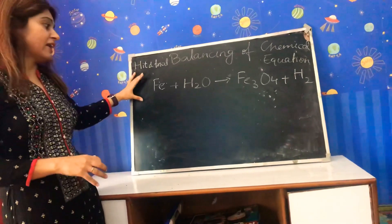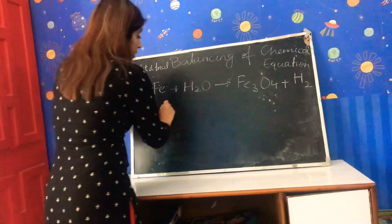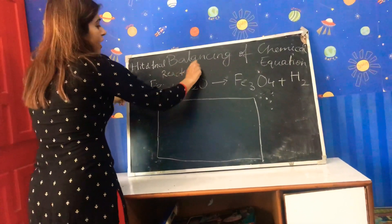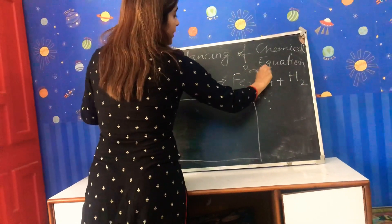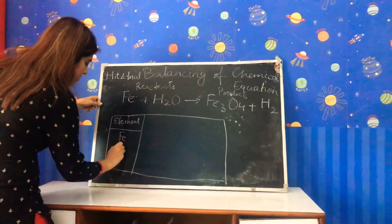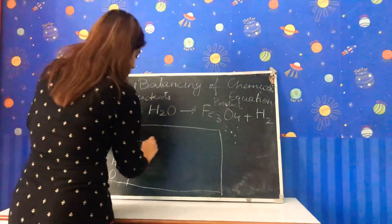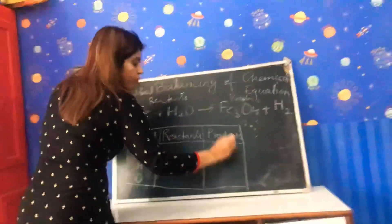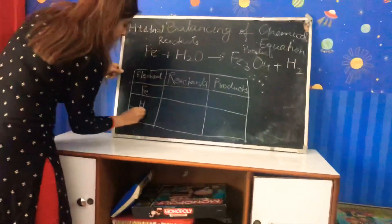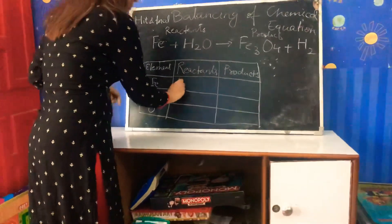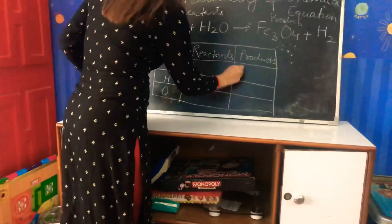First, we need to make a table. After making a table, we identify the reactants and products. What do we write in this table? First, we write the elements. We have three elements: iron, hydrogen, and oxygen. We write these in two columns — reactants and products. Now in the reactants, how many iron atoms are present? One. And in the products, how many iron atoms are present? Three.